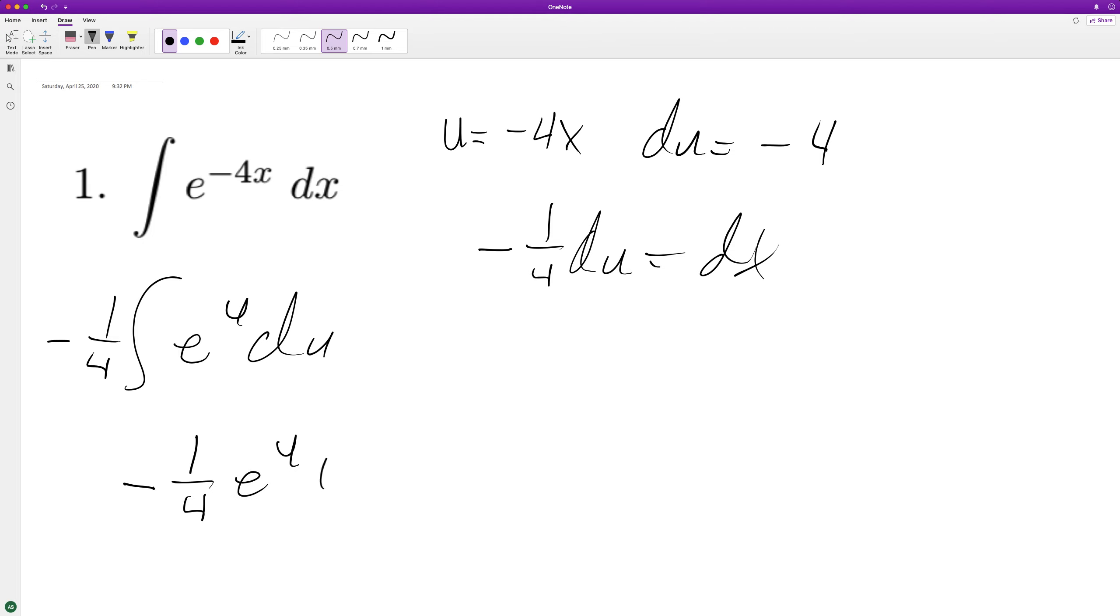It's just negative 1/4, e raised to the u plus c. We substitute back in, and we end up with negative 1/4 e raised to the negative 4x plus c.